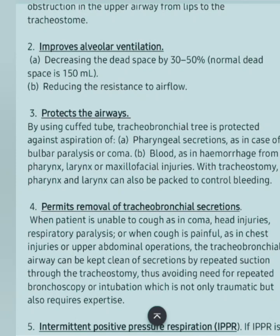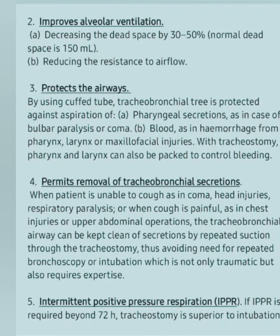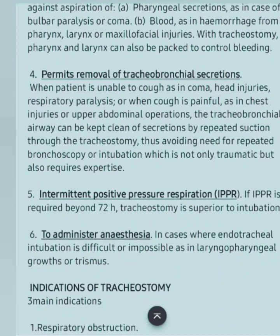The third function is protection of the airways. There are two types of tracheostomy tubes: cuffed and uncuffed. By use of a cuffed tube, the tracheobronchial tree is protected against aspiration of pharyngeal secretions, as in cases of bulbar paralysis or coma, and blood as in hemorrhage from the pharynx, larynx, or maxillofacial injuries. With tracheostomy, the pharynx and larynx can also be packed to control bleeding.